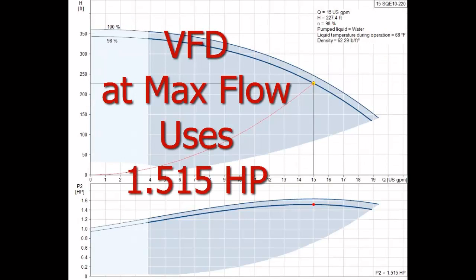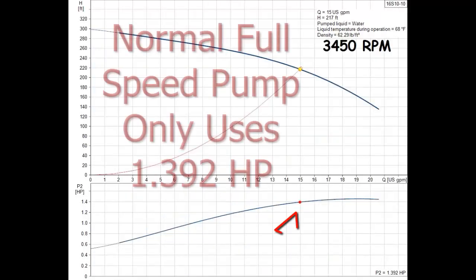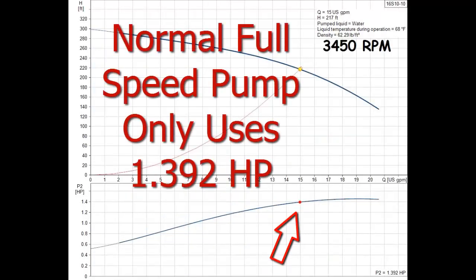Then, when you look at the power needed for the maximum flow rate of 15 gallons per minute, the variable speed pump uses 1.515 horsepower compared to a normal full speed pump using only 1.392 horsepower.